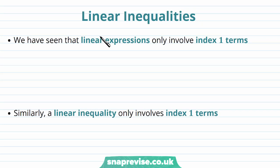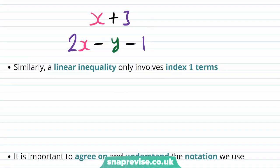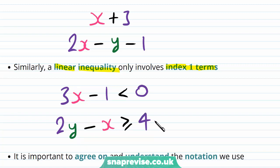So what exactly are linear inequalities? We have seen that linear expressions only involve index 1 terms. Namely, x plus 3 is a linear expression, and 2x minus y minus 1 is also a linear expression — both index 1 terms. Similarly, a linear inequality only involves index 1 terms. For example, the inequality 3(x minus 1) is strictly less than 0, or 2(y minus x) is greater than or equal to 4. These are two linear inequalities.